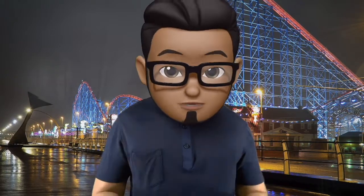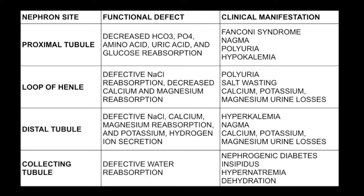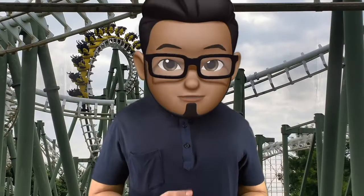Defects in these four parts lead to: for the proximal tubule, Fanconi syndrome with glucosuria, normal anion-gap metabolic acidosis from loss of bicarbonate, polyuria from loss of salts, and hypokalemia. For the loop of Henle: polyuria, salt wasting, and importantly, losses of calcium, magnesium, and potassium. For the distal tubule: a defect leads to hyperkalemia, normal anion-gap metabolic acidosis, and calcium, magnesium, potassium loss. For the collecting tubule: a defect leads to nephrogenic diabetes insipidus, hypernatremia, and dehydration.